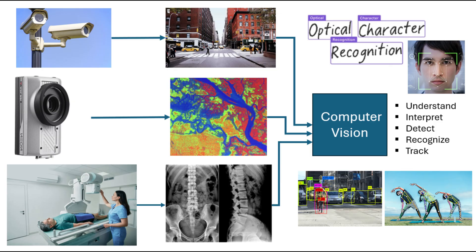Computer vision acts like the eyes of AI. Just like human vision, AI uses cameras to understand images, recognize people, their faces, read signs, optical characters, and analyze environments using visual perception.